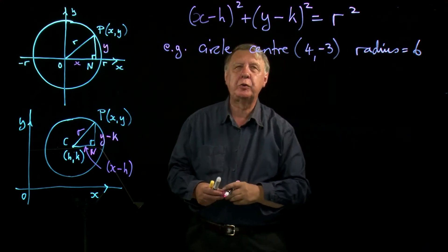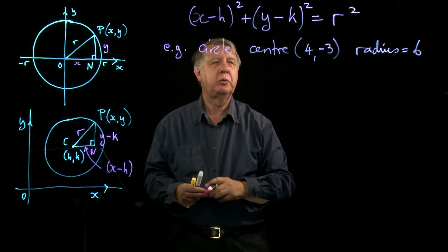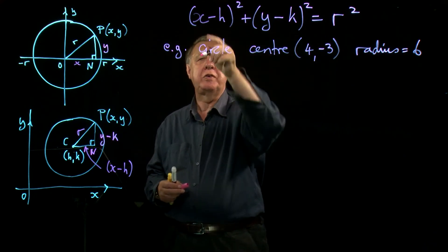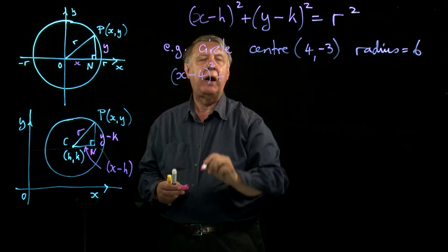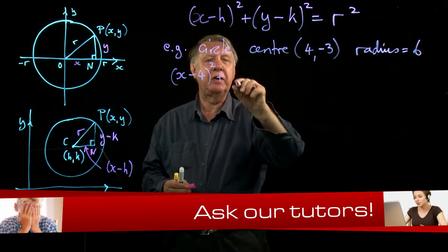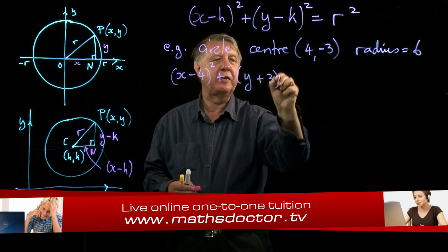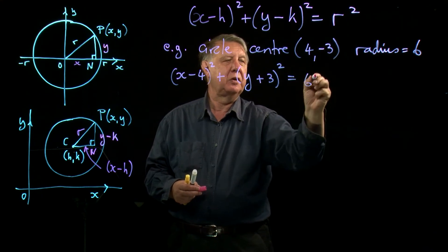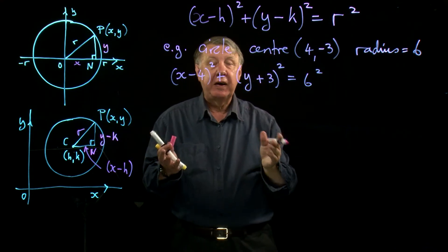We can use that formula straight away. It's not a difficult formula to remember because it's a bit like Pythagoras. So H then is 4, so it's X take away 4 squared. Add K which is negative 3. Be careful with your sign, so Y take away negative 3 is Y plus 3 squared. The radius is 6, 6 squared. And that is in fact the equation.